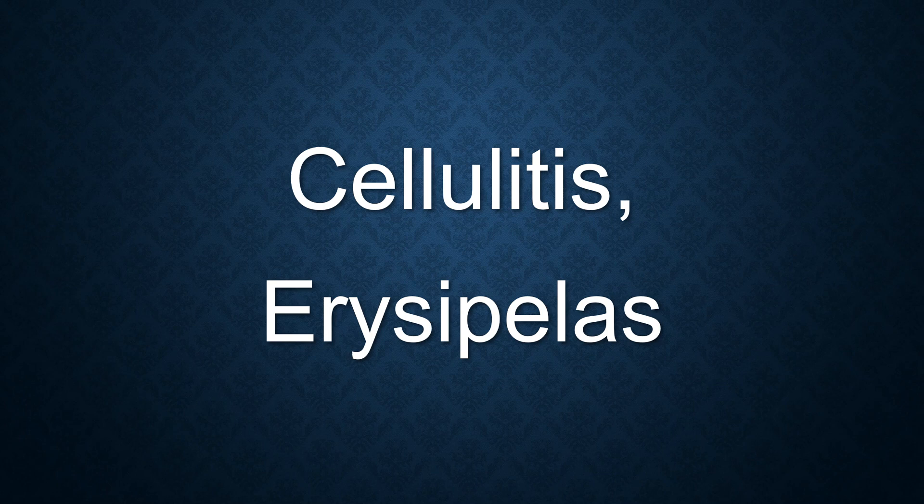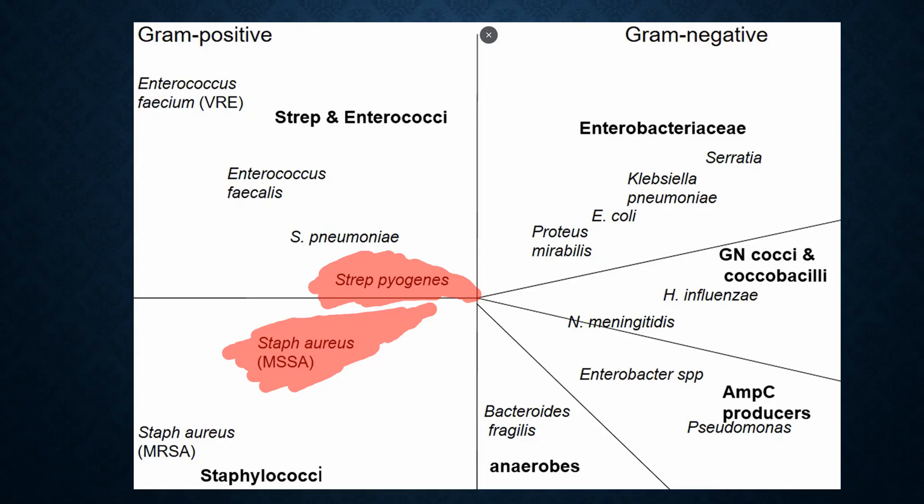Cellulitis and Erysipelas. The pathogens that cause cellulitis and erysipelas are gram-positive bacteria. It is usually Streptococcus pyogenes and Staphylococcus aureus.